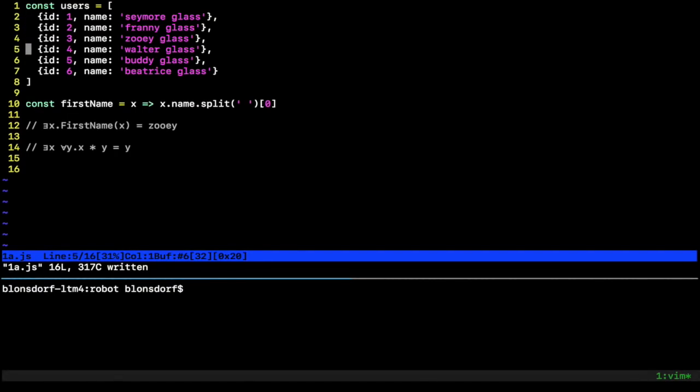Okay. So we have some users here and our users are from before and we have this first name helper that just grabs the first name of the user. So let's do this first one. It says there exists some user out there, some X, where their first name is Zoe. Okay. And of course we have Zoe right here.